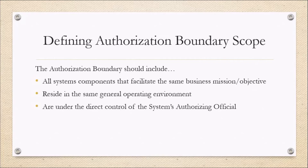Systems internal to the authorization boundary have to fully comply with all of NIST 853. Whereas systems external to the authorization boundary only have one specific control they have to comply with: SA-9, External Information System Services.